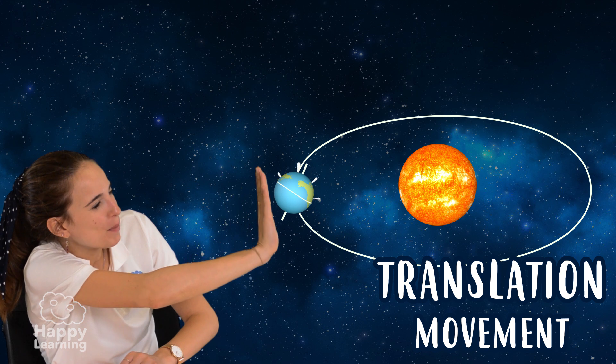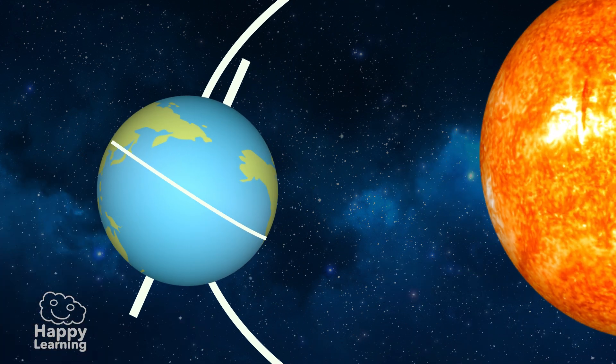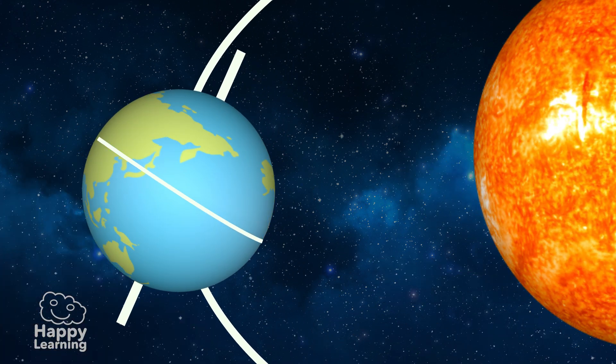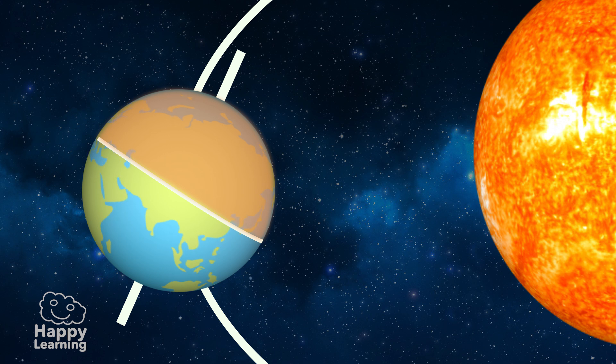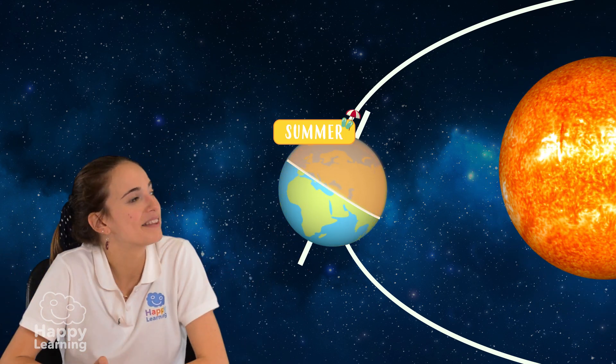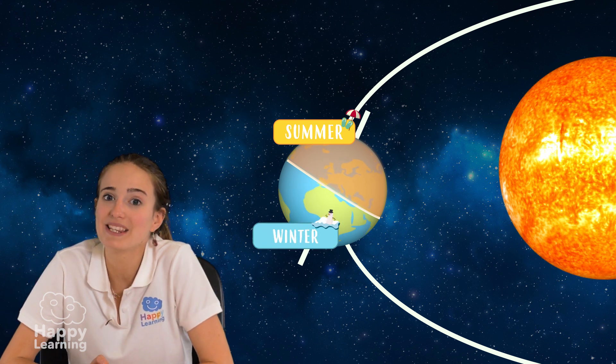Let's stop the planet. Stop! In this position the northern hemisphere has more sun rays because of the axis inclination, and that means that we're in summer, and meanwhile in the southern hemisphere it's winter.